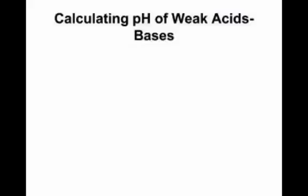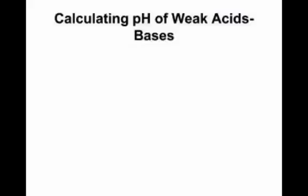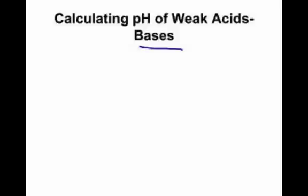Now we're going to do weak acids and weak bases. There's this amazing table of Ka values — kind of like a percentage dissociation. The higher the number, the stronger the acid. These are stronger of the weak, and these are weaker. They're all weak acids, but the strongest weak acid on this table is the hydrogen sulfate ion.